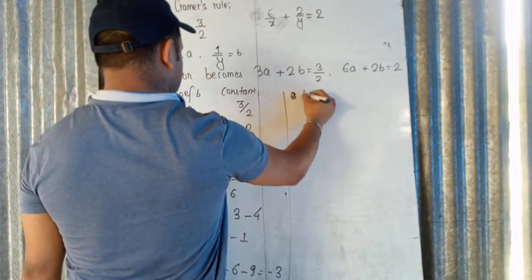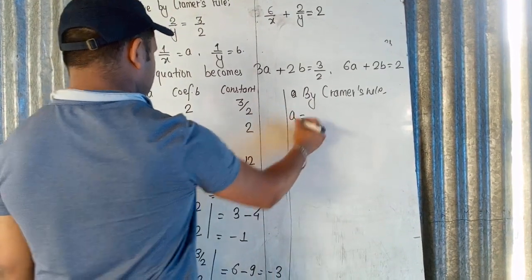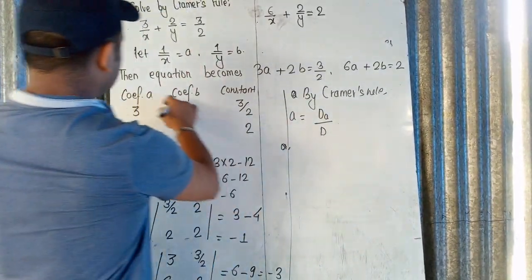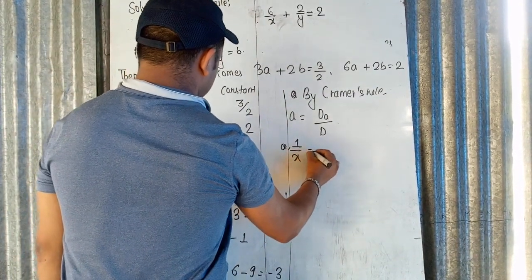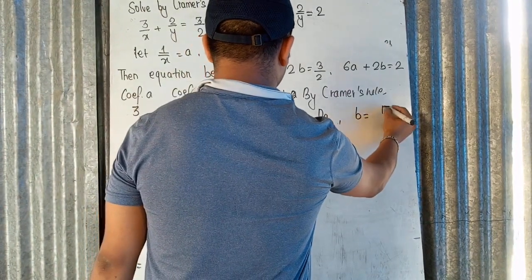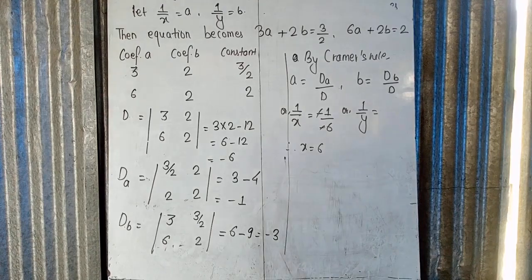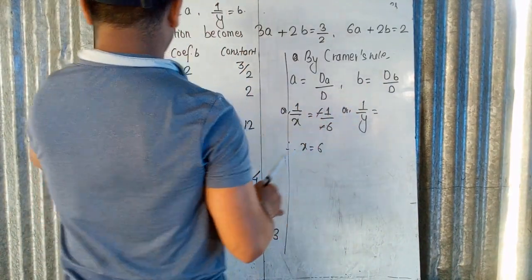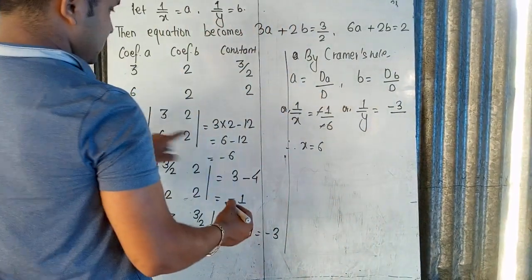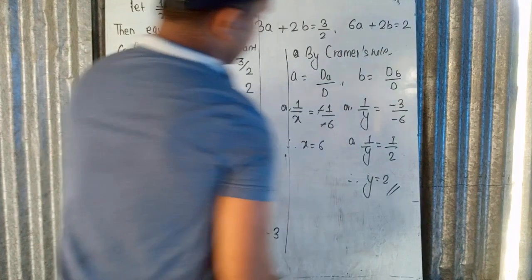To find Db, we write the a-coefficients first and constants later. So 3 into 2 minus 3 by 2 into 6 equals 6 minus 9 equals minus 3, giving Db equals minus 3. By Cramer's Rule, a equals Da by D, so 1 by x equals minus 1 divided by minus 6 equals 1 by 6, giving x equals 6. Similarly, b equals Db by D, so 1 by y equals minus 3 divided by minus 6 equals 1 by 2, giving y equals 2.